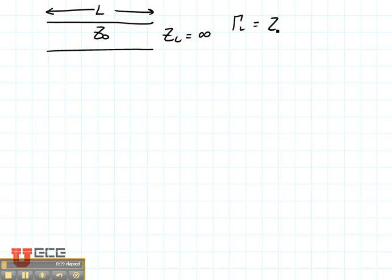The reflection coefficient of the load is ZL minus Z0 over ZL plus Z0. Since this is infinity over infinity, the Z0s are very small compared to infinity. Our reflection coefficient is 1.